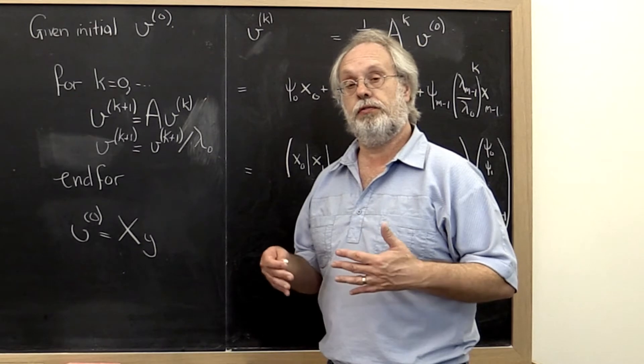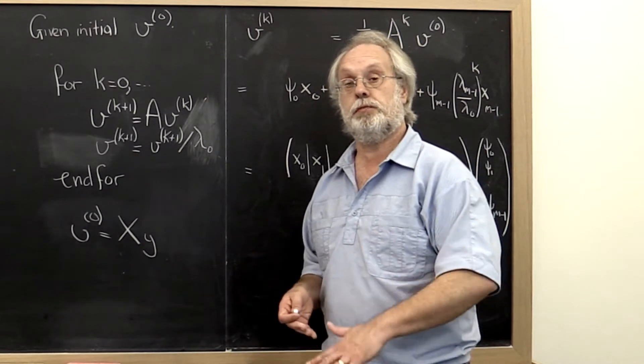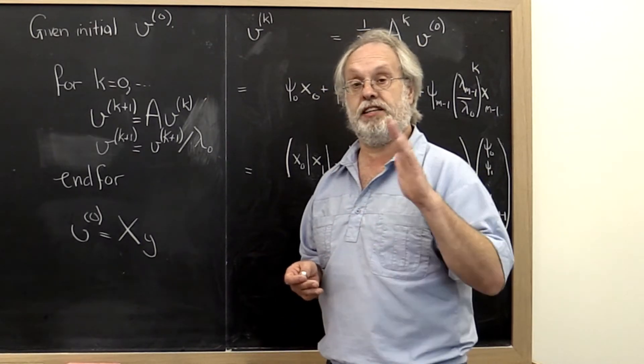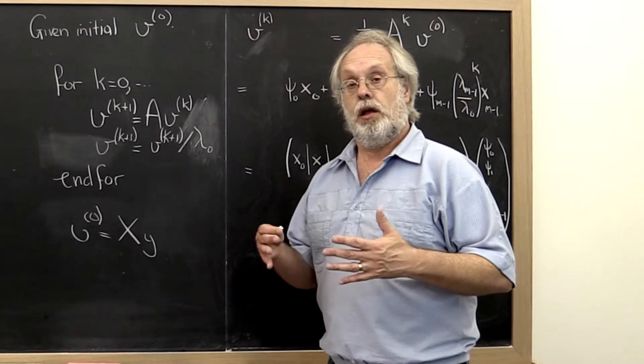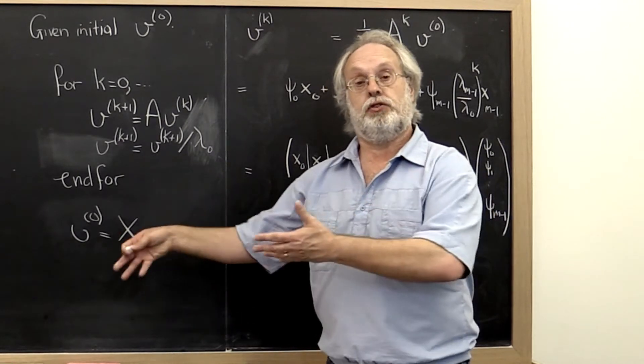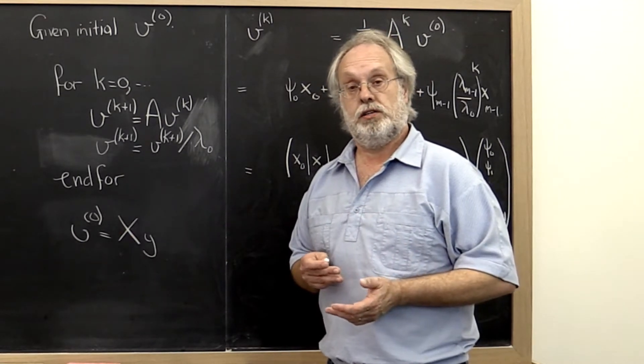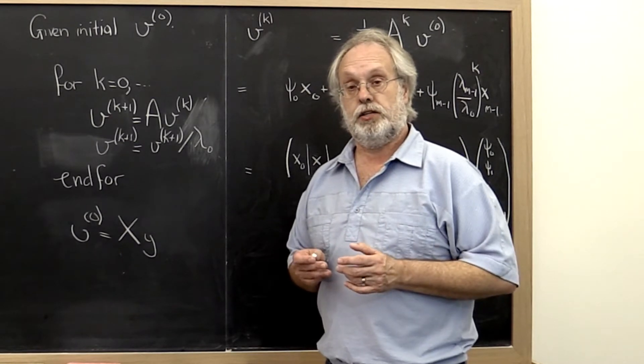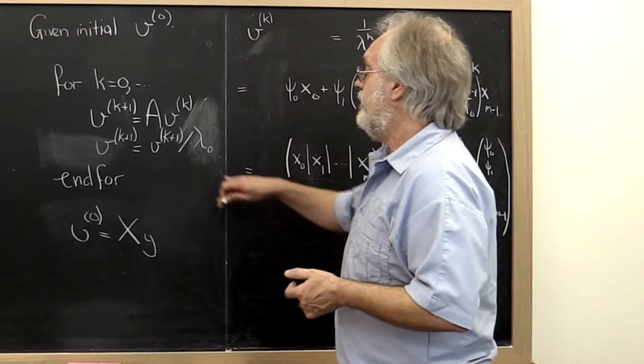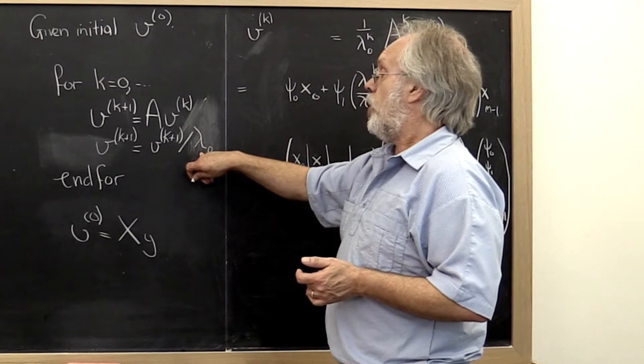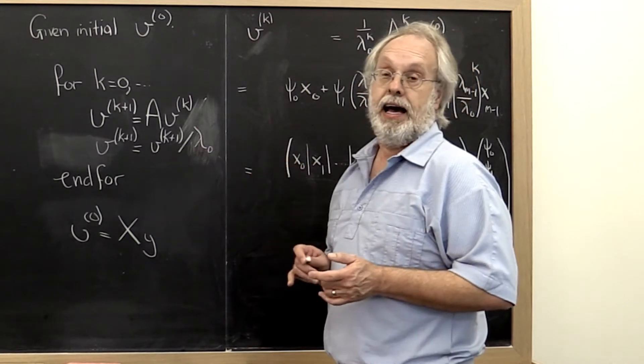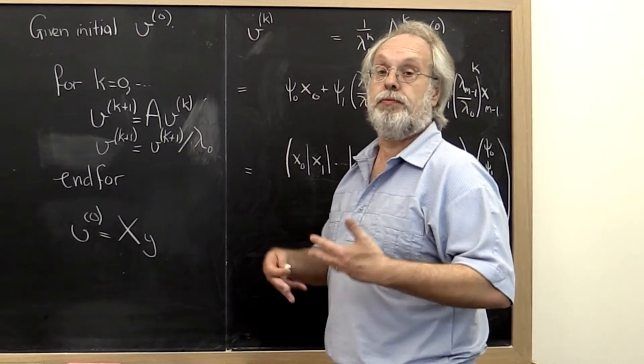And therefore if we can prove that one of them starts pointing in the right direction and how fast that happens, then that automatically translates to how the other ones start pointing in that direction as well. So it's convenient to pick the version where we divide by the eigenvalue as if we know it up front.